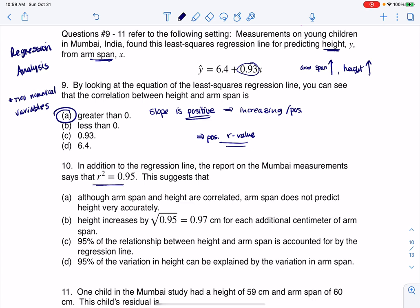Then they get into the coefficient of determination, R squared. It says in addition to the regression line, the report on the Mumbai measurement says that R squared is 95%. If you wanted to get from R squared to R, just as a little side note, let me put this off to the side. If you know R squared is 0.95, you can take the square root of that number and get your R value. So I could tell you R was either positive or negative 0.975.